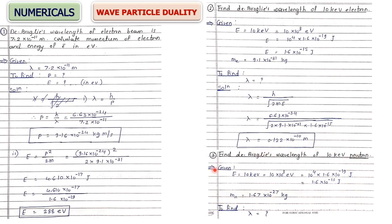Third numerical: find de Broglie wavelength of a 10 kilo-electron-volt neutron. The same steps apply — convert 10 keV to joules — but here you must use the mass of neutron instead of mass of electron in the formula λ = h / √(2mE).